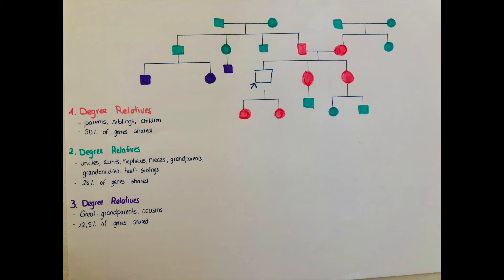Second degree relatives include uncles, aunts, nephews, nieces, grandparents, grandchildren, and half-siblings. Then in violet, a smaller portion of the family tree, are the third degree relatives — great-grandparents and cousins — those with whom this person shares only 12.5% of their genes. I drew a small r equals 0.5, 0.25, and 0.125 beside each group — this is the coefficient of relation.